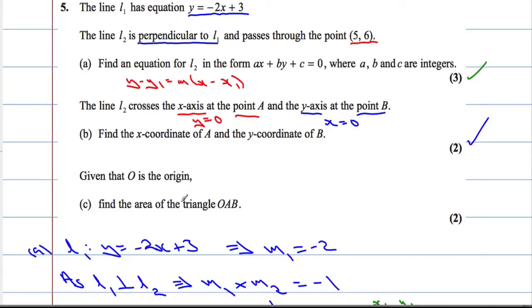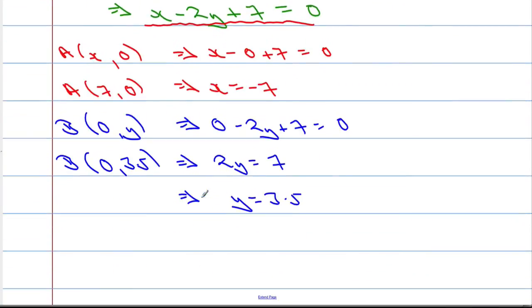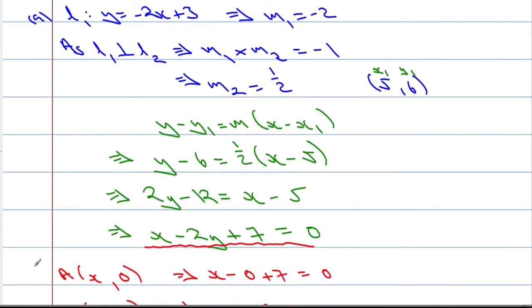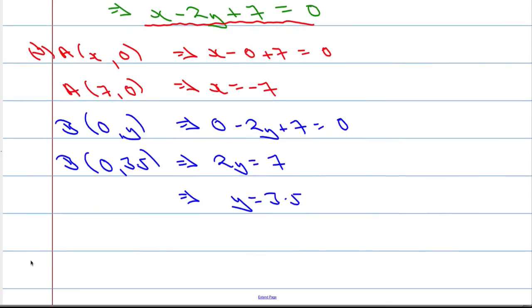Given that O is the origin, we're asked to find the area of the triangle OAB. So, I should make sure I label the parts correctly. This was part B here. And part C, we want the area of OAB. Now, OAB is a triangle. I'm going to do a little sketch to help us visualize what's going on.